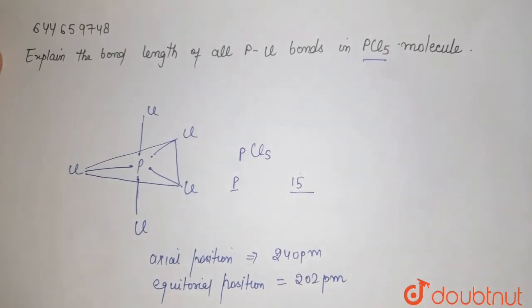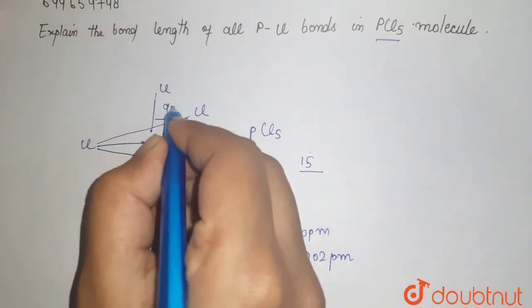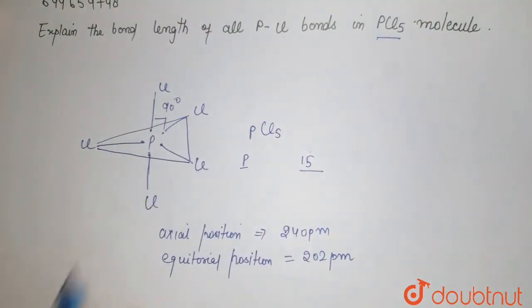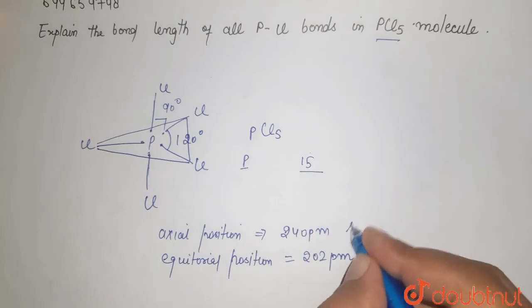The bond angle between these two here is 90 degrees, and the equatorial ones have 120 degree angle. So you can see that your axial positions have longer bond length.